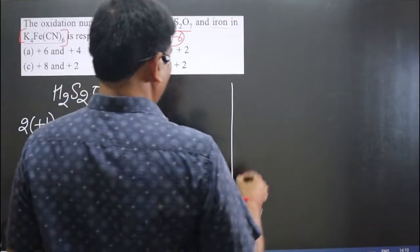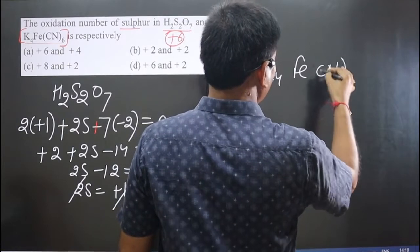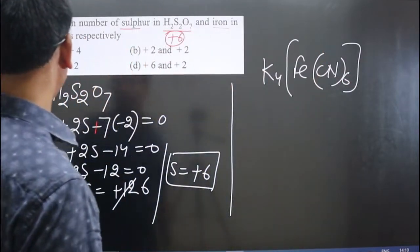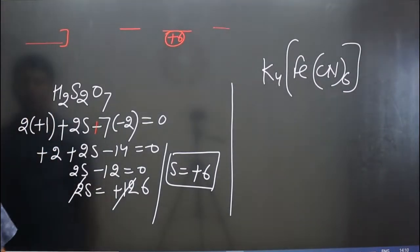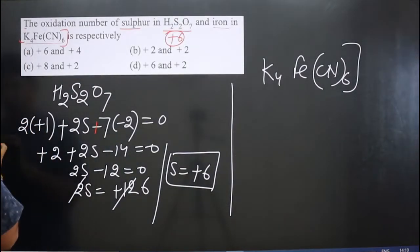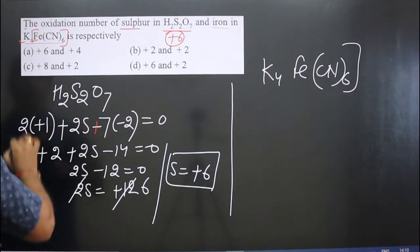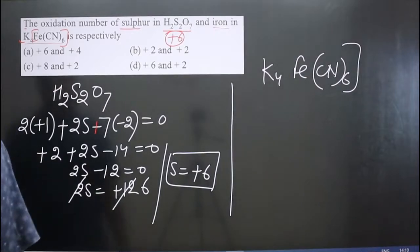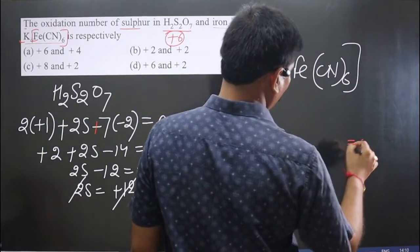Now we move on to the next complex. In the next complex, we have K₄[Fe(CN)₆]. This is the complex we have, and it is a neutral complex, so we can set the total equal to zero.